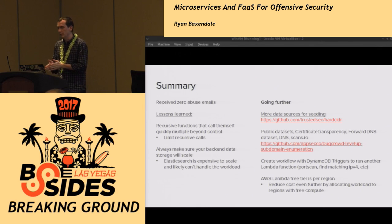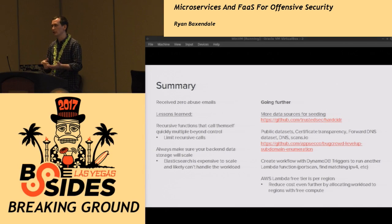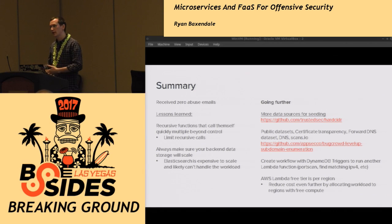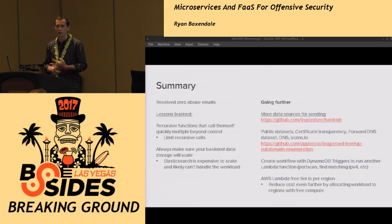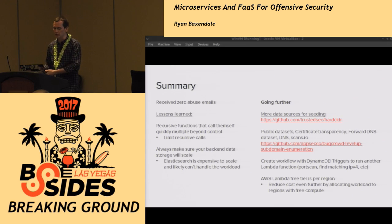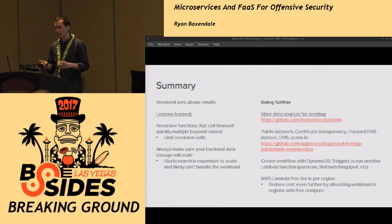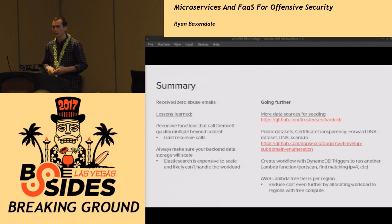To take this further, it's about getting more seed data — looking at sources like Trusted Sec's hard cider, getting more routing information, figuring out what's advertised, and looking for more public data sets. The good thing with DynamoDB is you can set up triggers so when there's a new write, you can trigger another Lambda function to maybe do a port scan, or look up in Censys, Mr. Looker, or Shodan to figure out publicly available information on that IPv6 address. Also, AWS Lambda's free one million executions are per region, so spreading your workload across different regions can maximize free execution time.